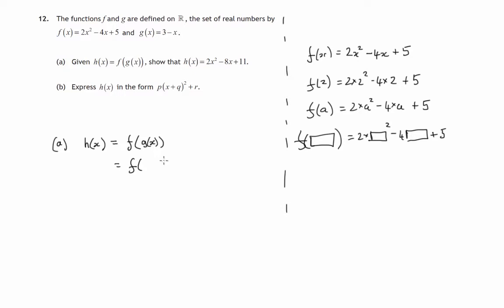Now we know g of x is 3 minus x, we're told that. So we're putting 3 minus x into f, therefore we have to square it and double the result. We have to take away 4 times the 3 minus x, and then add 5. So let's write that down. It's twice 3 minus x squared minus 4 times 3 minus x plus 5. And remember, that's just coming from the original formula by replacing x by 3 minus x.